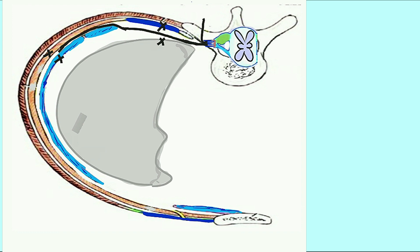In this way the intercostal nerve moves toward the lateral part of the thoracic wall and then toward the anterior part. In the anterior part, the nerve lies between the sternocostalis and the internal intercostal muscle. At this point the nerve terminates by becoming the anterior cutaneous nerve, moving toward the skin.